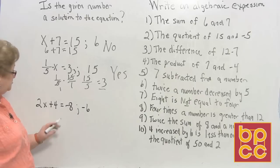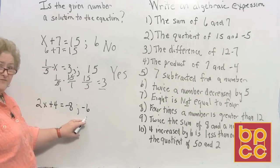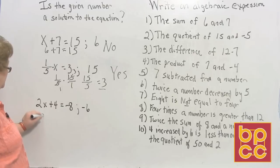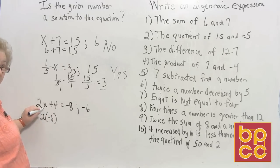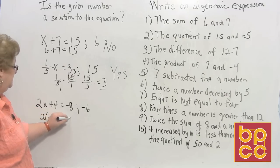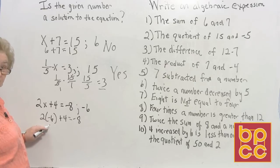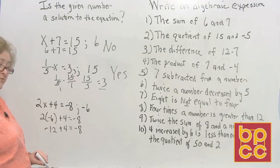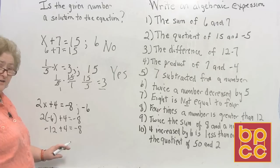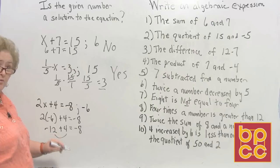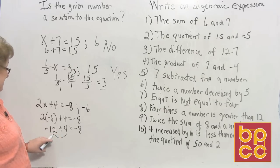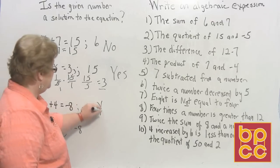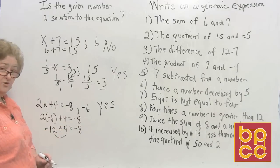On this next one, we have 2x plus 4 equal negative 8. I'd like you to try negative 6 in this equation. 2 times negative 6, because 2x means 2 times negative 6, plus 4 equals negative 8. Well, 2 times negative 6 is negative 12. Negative 12 plus 4 — when you have a positive and a negative, you take the difference between the two and go with the sign of the greater one. The difference is 8 and there is more negative, so the answer is negative 8. Negative 6 did work in the place of x, so yes, negative 6 is the solution for that equation.